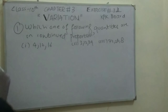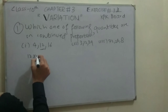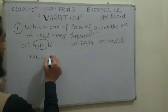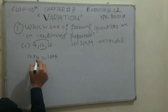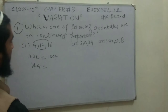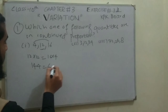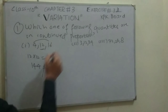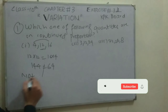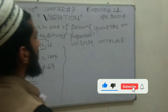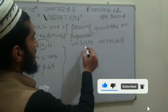Using this property for Part 1: the middle number is 12, so 12 × 12 should equal the product of the extremes, 16 × 4. We get 12 × 12 = 144 and 16 × 4 = 64. Since the two sides are not equal, 4, 12, and 16 are not in continued proportion.